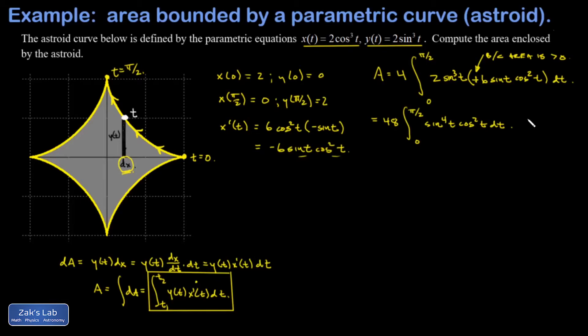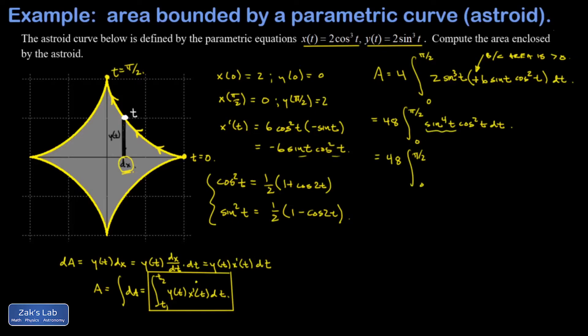When you have even powers of sines and cosines you need power-reducing identities: sin²t = (1 − cos 2t)/2 and cos²t = (1 + cos 2t)/2. I'll think of sin⁴t as (sin²t)² and apply the identity twice, and apply the cosine squared identity as well. The three factors of one-half give 1/8 out front, which cancels an 8 from 48, leaving a factor of 6.